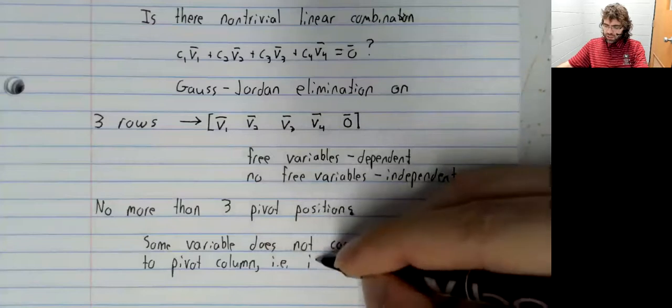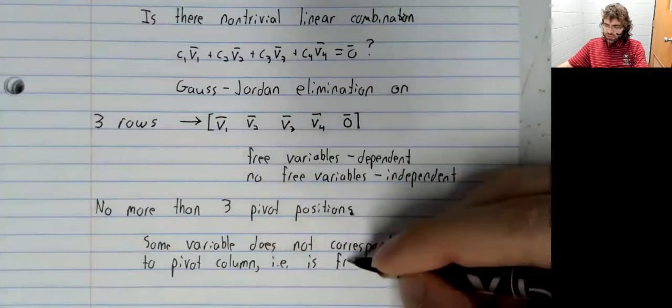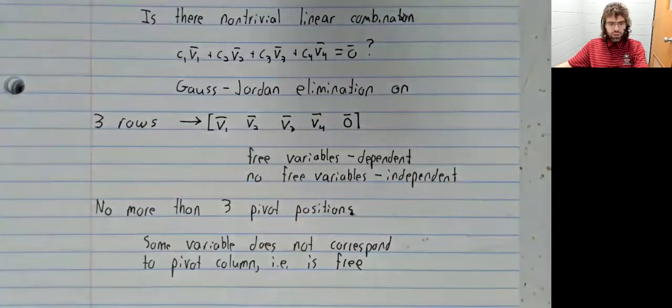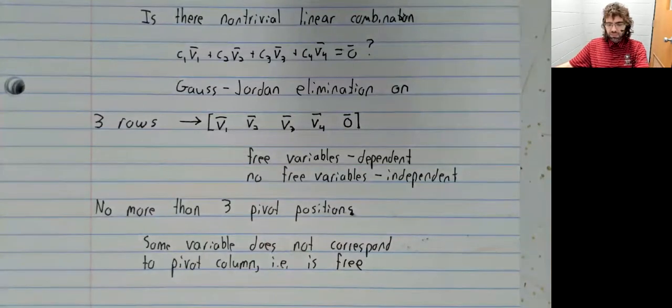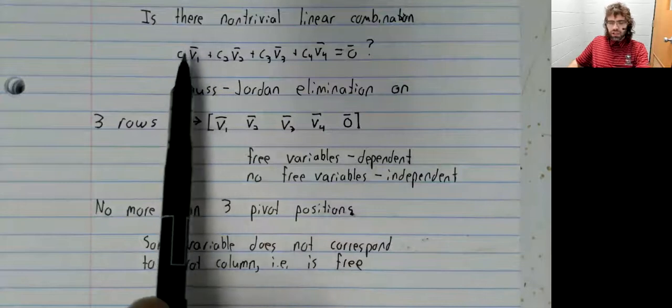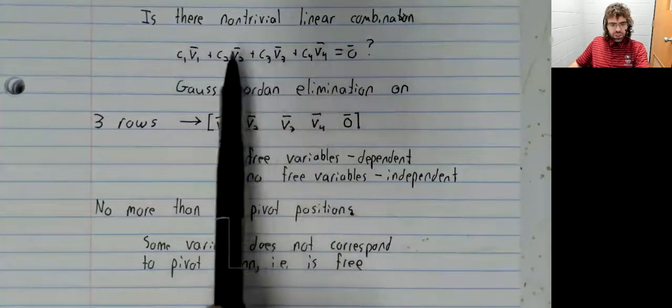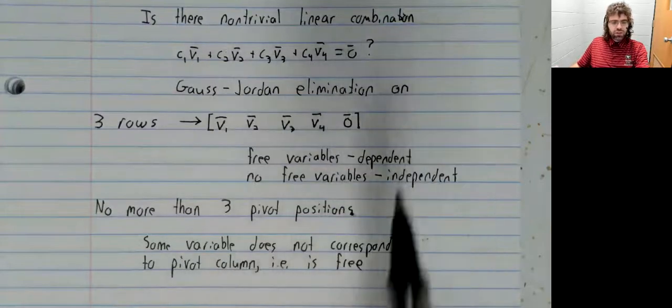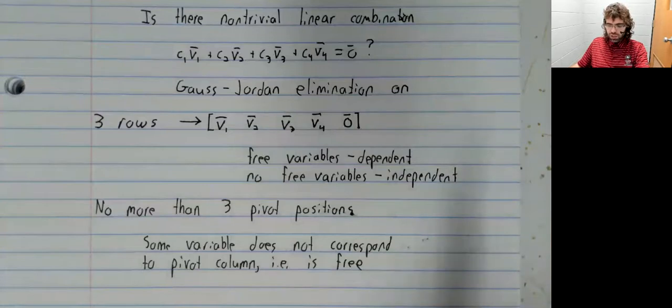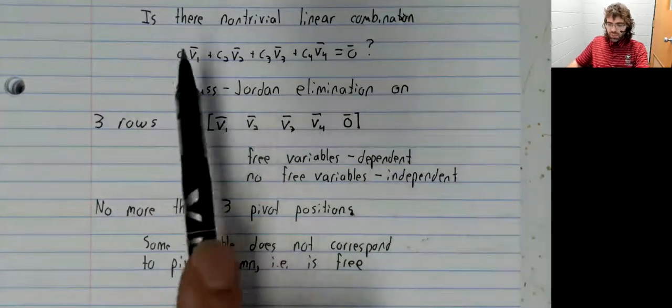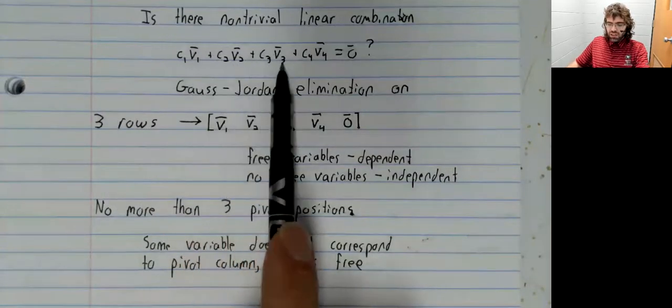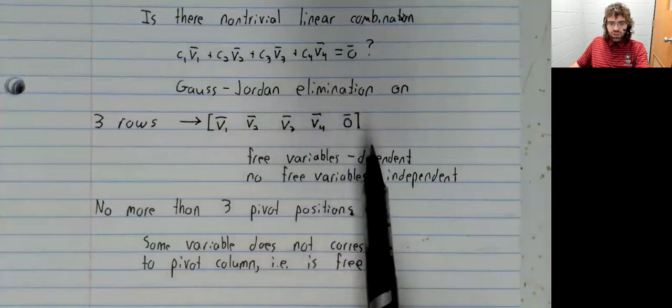That is to say, at least one of these variables is free. That means this has infinitely many solutions. So it certainly has non-trivial solutions, which makes these vectors dependent.